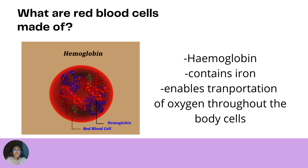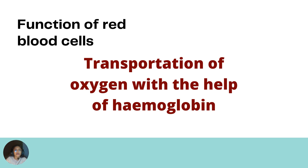Red blood cells are essentially very small packages containing the red pigment called hemoglobin, which is a special kind of protein containing iron. This pigment enables red blood cells to transport oxygen from the lungs to all parts of the body. So red blood cells are made up of hemoglobin, which contains iron and enables transportation of oxygen throughout the body.